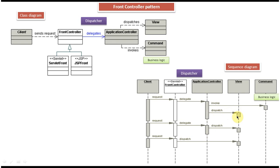The view gets the information from the application controller and displays it in the browser to the client, so that the client can see the information in the browser. This is how the whole front controller design pattern works, as shown in this sequence diagram. This concludes the front controller design pattern class diagram and sequence diagram. Thanks for watching. Bye.